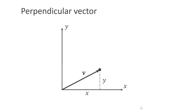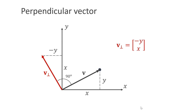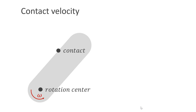A last concept we need is the perp operator, which computes a vector perpendicular to a given vector v with coordinates x and y. The result is a vector turned 90 degrees in the mathematically positive direction — counterclockwise — and is easily computed as the vector with coordinates minus y and x. To handle the collision between the ball and the capsule, we also need the velocity at the contact point. For the ball this is simply its own velocity, but for the capsule we compute the velocity vector using the angular velocity omega and the vector r pointing from the rotation center to the contact point: velocity is r scaled by omega and turned 90 degrees.